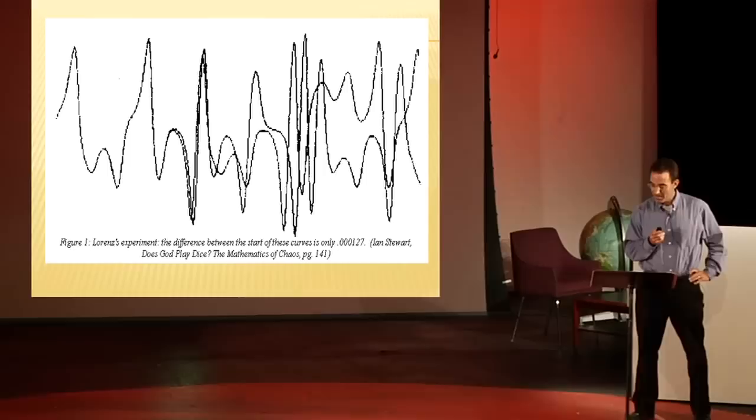It means that the tiniest change in starting conditions, even one way too small to see, will eventually create very different results in a surprisingly short period of time. It means that even if you have the perfect mathematical model, which is a big if, you would need to enter data with an impossible level of accuracy in order to see any distance into the future.